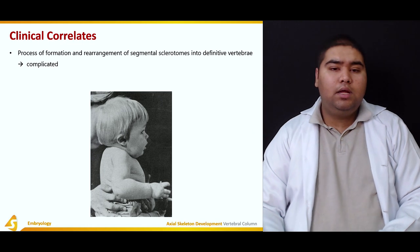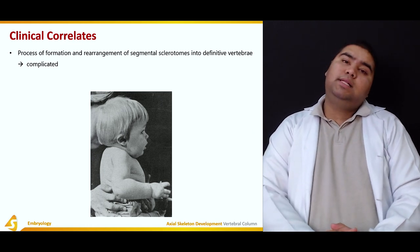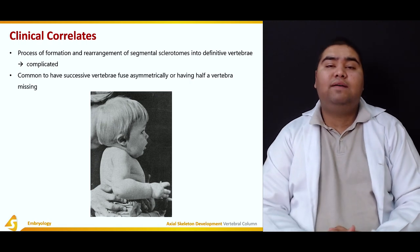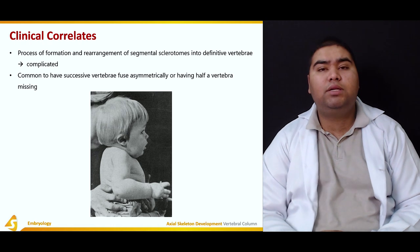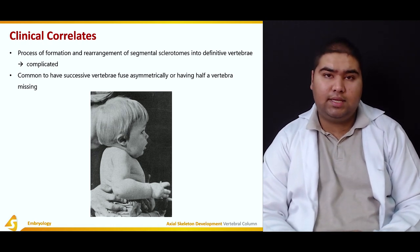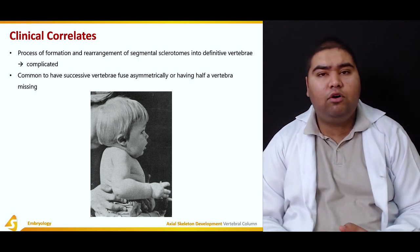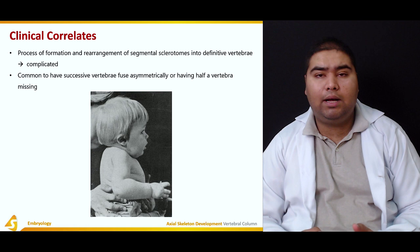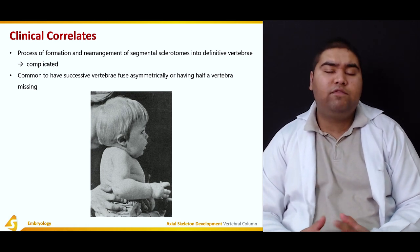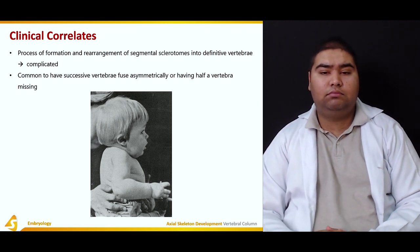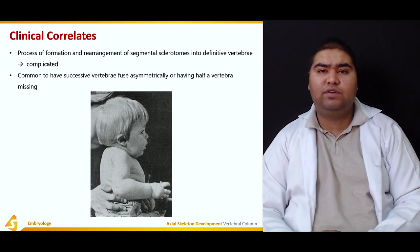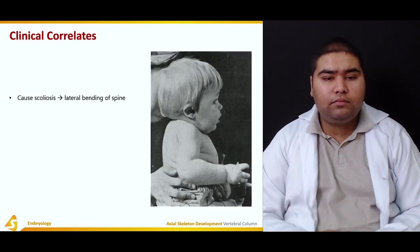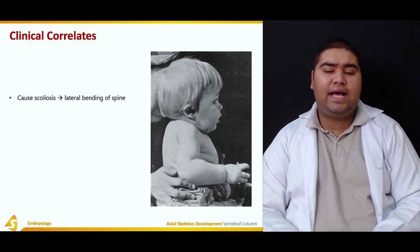Regarding the clinical correlates: the process of formation and rearrangement of segmental sclerotomes into definite vertebrae is complicated, so it is common to have successive vertebrae fuse asymmetrically or have half a vertebra missing. Asymmetrical fusing or a half vertebra due to defects in this process can cause scoliosis, which is lateral bending of the spine.